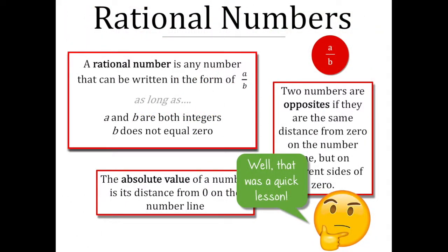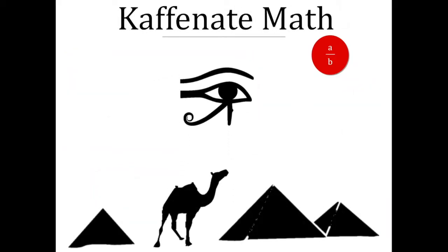It was a very quick video today because all we had to do was add the concept of rational numbers to what we already knew about opposites and absolute value. And I was just thinking, if the ancient Egyptians used the Eye of Horus to denote fractions, how would they have dealt with absolute value?